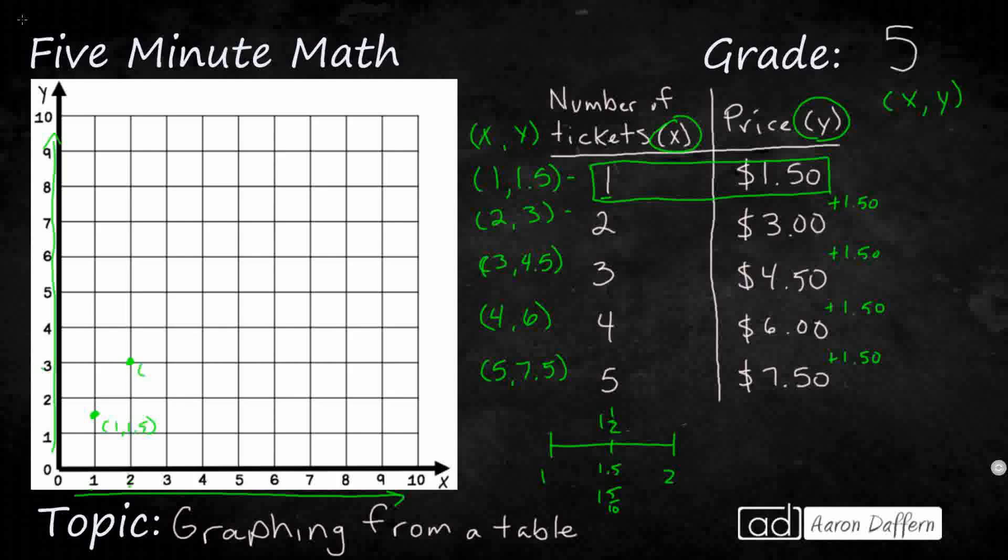And what you're going to notice happening is we are going to get a straight line. This is what we call a linear relationship because it's the same price for each ticket. It's 1.5. Each of these dots are going to be 1.5 away if you're going up and down, they're going to be 1 away if you're going side to side.